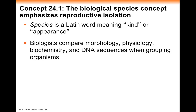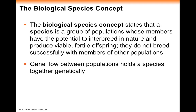How we define species is going to depend a lot on the organism. The biological species concept is one of the easiest to grasp, and it relies heavily on reproductive isolation. We define a species as a group of populations whose members have the potential to interbreed in nature and produce viable, fertile offspring — offspring that are able to survive and reproduce, meaning they're fit. They do not breed successfully with members of other populations; they are reproductively isolated from other populations.